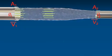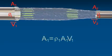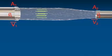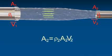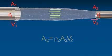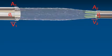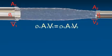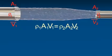Therefore, mass of liquid entering per second at A1 and mass of liquid leaving per second at A2. Assuming there is no loss of fluid in tube, that is for ideal fluid.